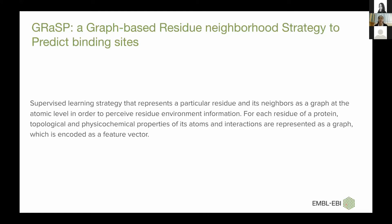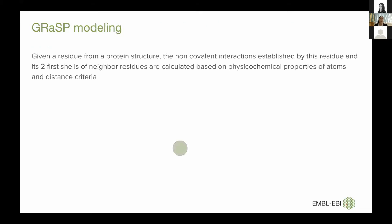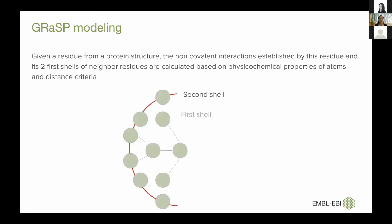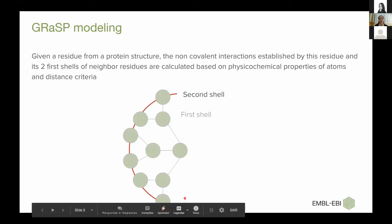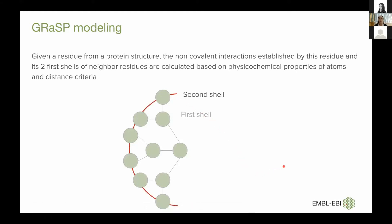For each residue from the protein structure, some topological and physicochemical properties of its atoms and interactions are represented as a graph. The non-covalent interactions established by this residue and its two first shells of residues are calculated based on physicochemical properties of atoms and distance criteria. We represent the residue itself and also represent the structural neighborhood of this residue. The next step is to encode this graph as a feature vector.